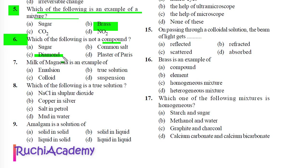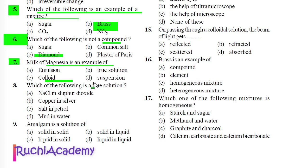Question 7: Milk of magnesia is an example of: A) Emulsion, B) True solution, C) Colloid, D) Suspension. The correct answer is Suspension. Milk of magnesia is an example of suspension.